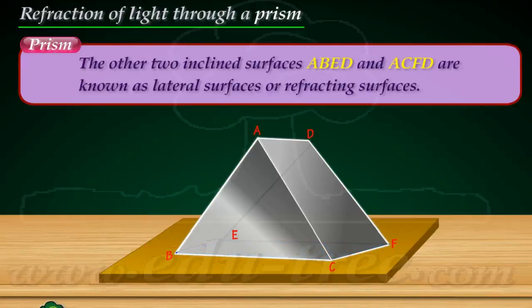The other two inclined surfaces, A, B, E, D and A, C, F, D are known as lateral surfaces or refracting surfaces.